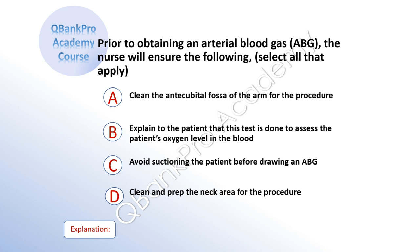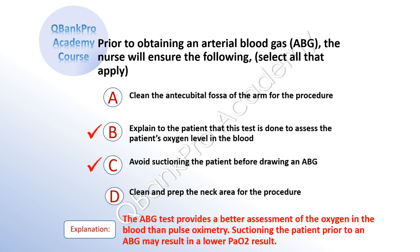Prior to obtaining an arterial blood gas, ABG, the nurse will ensure the following — select all that apply: A, clean the antecubital fossa of the arm for the procedure. B, explain to the patient that this test is done to assess the patient's oxygen level in the blood. C, avoid suctioning the patient before drawing an ABG. Explanation: The ABG test provides a better assessment of oxygen in the blood than pulse oximetry. Suctioning the patient prior to an ABG may result in a lower PaO2 result.